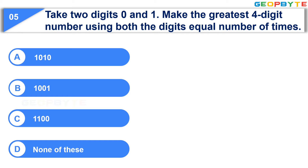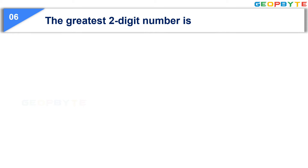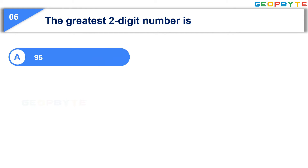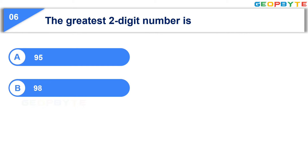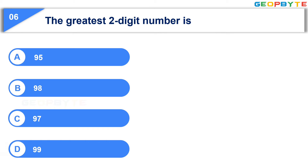Your time is up and the correct answer is Option C: 1100. The next question is: The greatest 2-digit number is — Option A: 95, Option B: 98, Option C: 97, Option D: 99. Your time starts now.